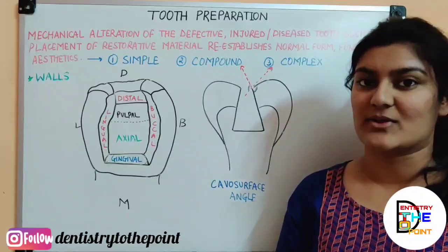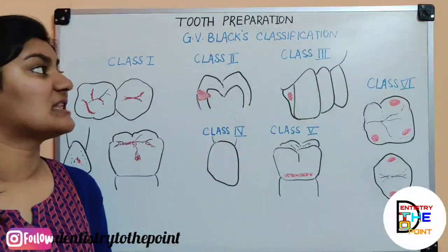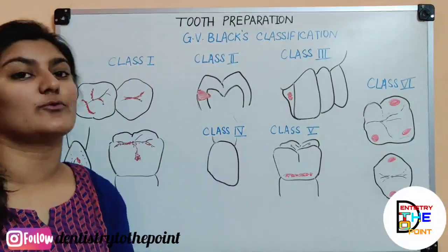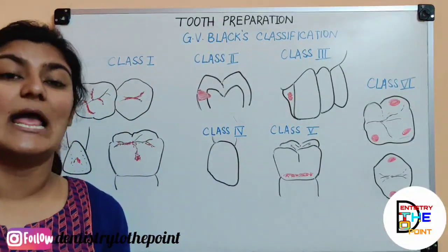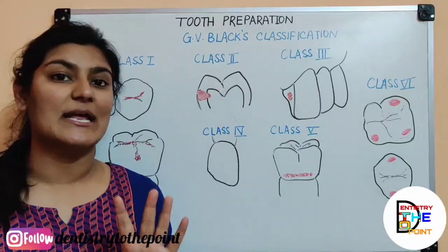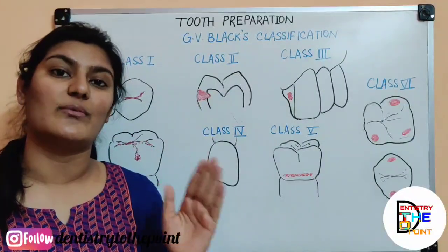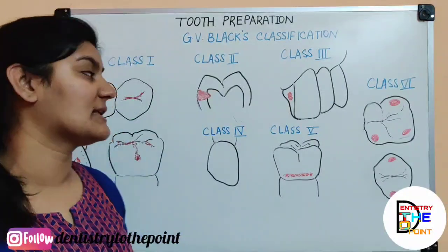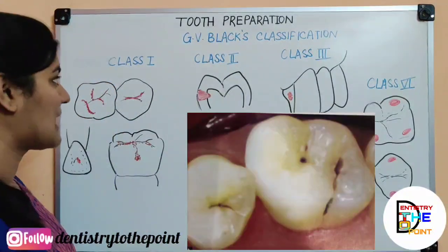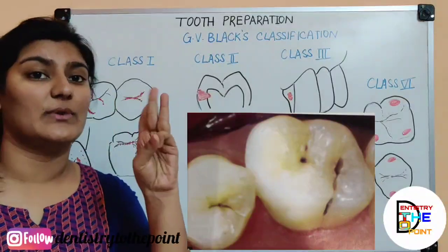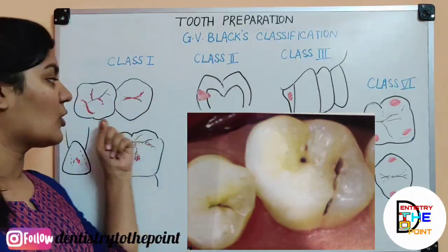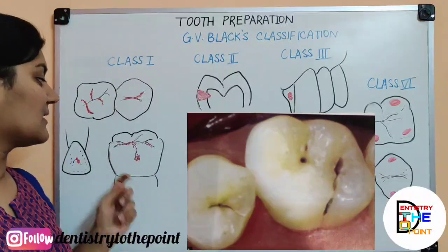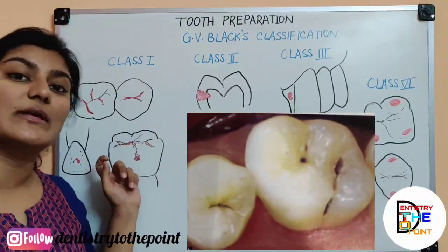Next is the very important GD Black's classification — Green Vardiman Black's classification of tooth preparation. He divided cavity preparations into five types: class 1, 2, 3, 4 and 5. A sixth class was later added.